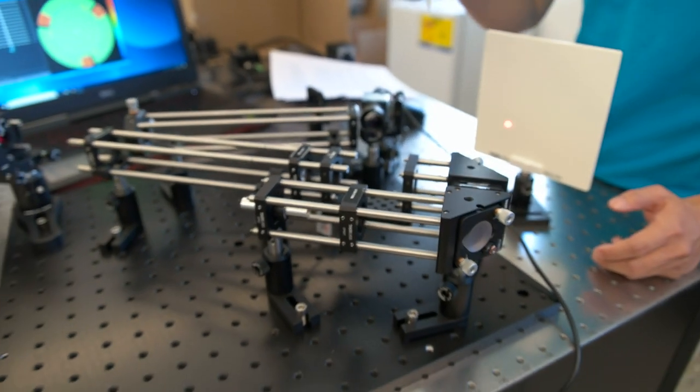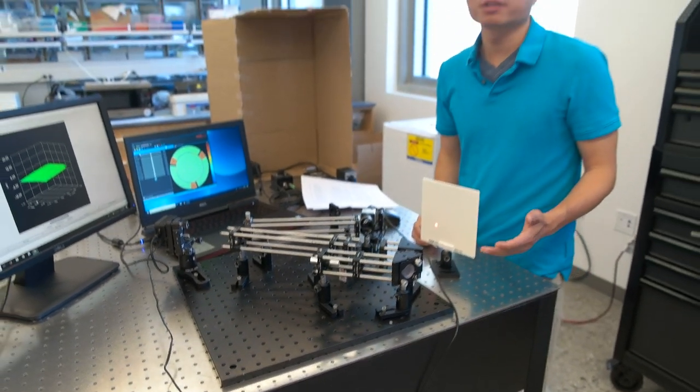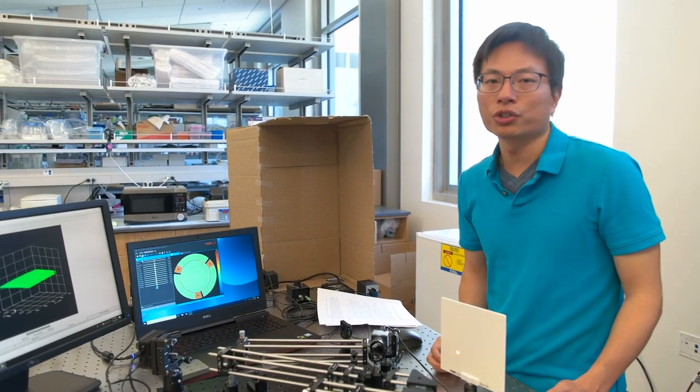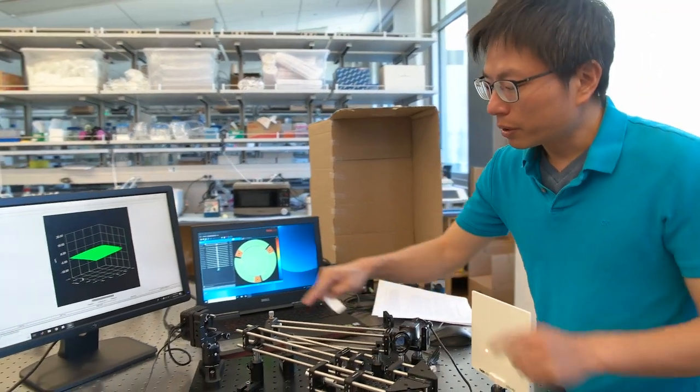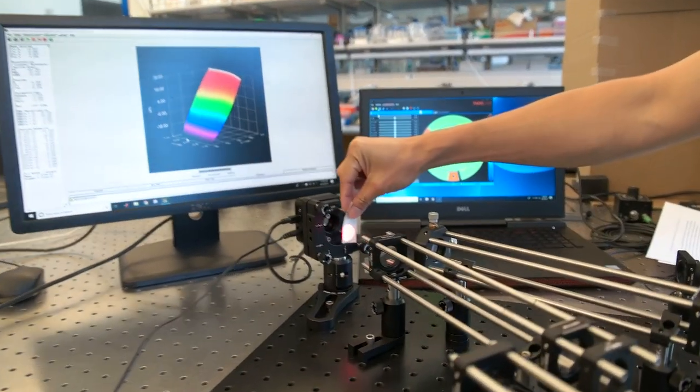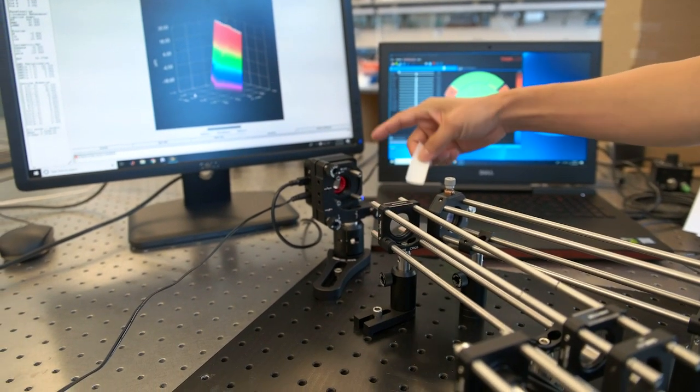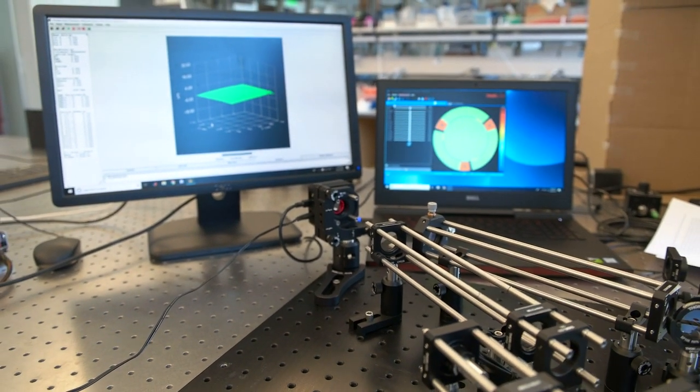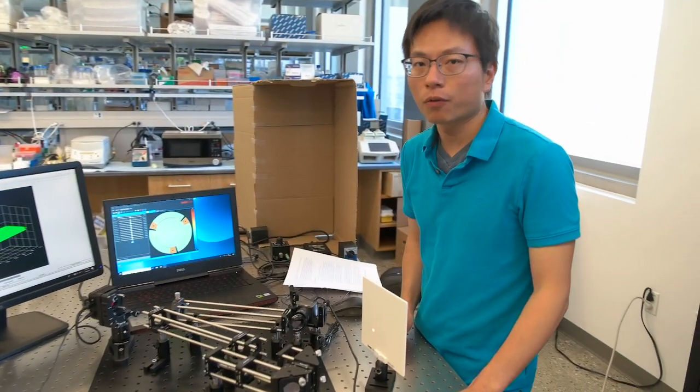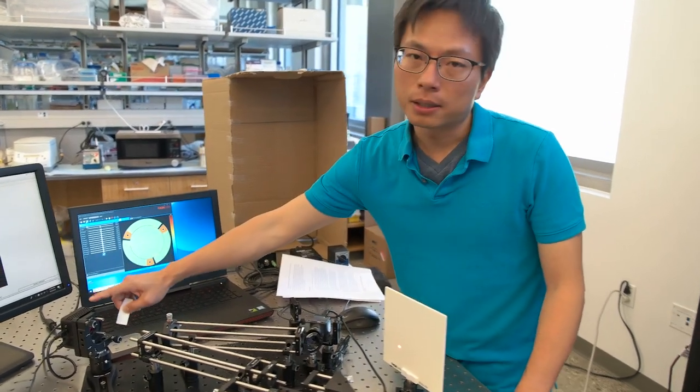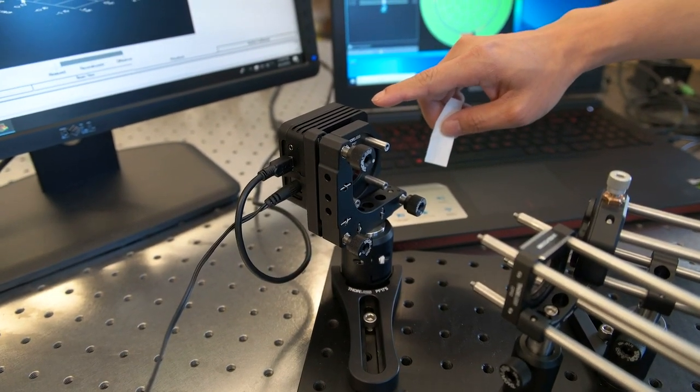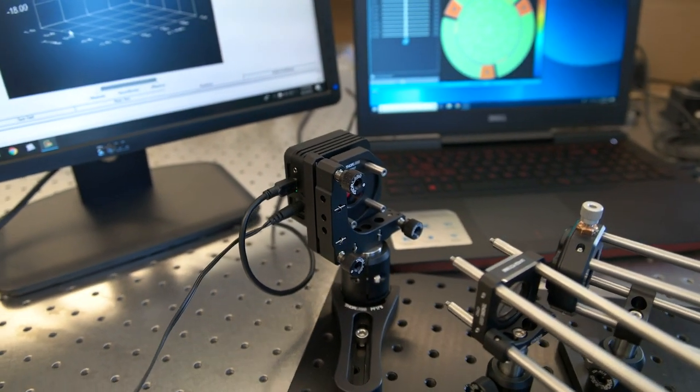Two more lenses are used to enlarge the laser beam further so that we can fit the beam size to the aperture of the deformable mirror and fully use its surface area. This is the deformable mirror that can change shape to compensate for wavefront distortion.